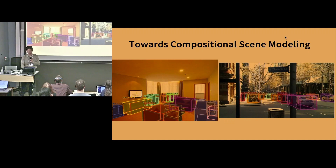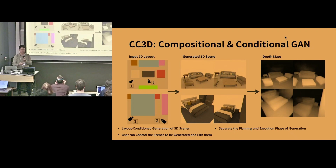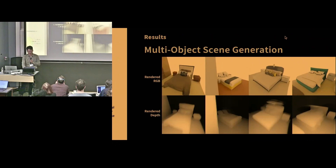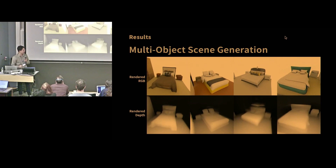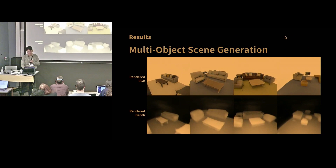I've also done work towards compositional scene modeling. Decomposing a scene into multiple objects often increases the ability to generate and model complex scenes. In a recently published paper called CC3D, instead of generating an entire scene from scratch, we split it into two stages: a planning stage where a 2D input layout is given to the network — either generated by a neural network or drawn by the user — and then our method generates the corresponding 3D scene. The scenes are generated nicely, and since they are user-drawn, they are easy to edit.